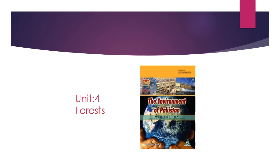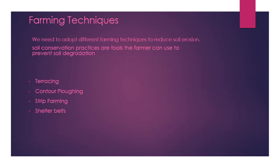We have been studying unit 4, that is forests. You need to come to page number 18 of your book. The environment of Pakistan — our today's topic is farming techniques. We discuss soil conservation practices in mountainous areas of Pakistan. Soil conservation is a big problem, and to combat this problem we need to adopt different farming techniques. Soil conservation practices are tools the farmer can use to prevent soil degradation in Pakistan.